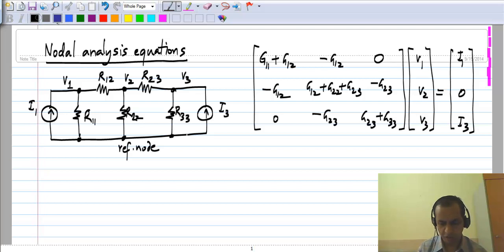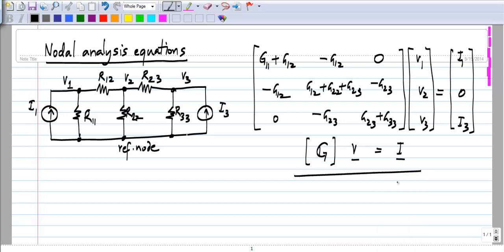And of course, this can be written as the conductance matrix G times the vector of node voltages V equals the vector of independent sources I. So this is the nodal analysis equation setup, and of course we can solve for V by using matrix inversion.